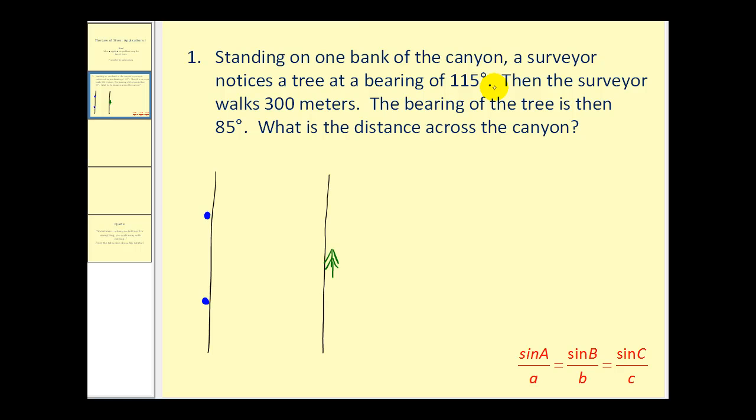Remember, bearings are measured from due north. So if this is due north, the bearing to this tree would be 115 degrees. So this angle here is 115 degrees. Then the surveyor walks 300 meters, so the distance from this blue point to this blue point is 300 meters. And now the tree is at a bearing of 85 degrees. So measuring from due north, this angle here would be 85 degrees.